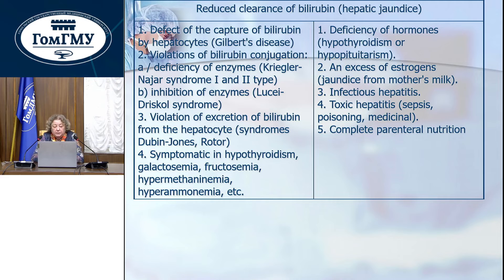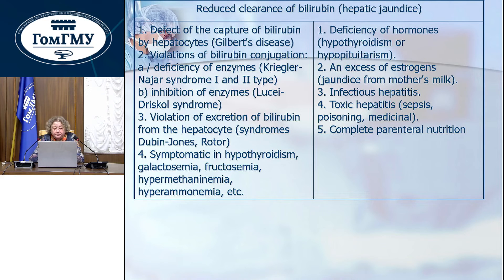Parenchymatous or hepatic neonatal jaundice, which includes erythropoietic porphyria or hepatic jaundice: defect of capture of bilirubin by hepatocytes such as Gilbert disease; violation of bilirubin conjugation — deficiency of enzyme in Crigler-Najjar syndrome type 1 and type 2; inhibition of enzyme; violation of excretion of bilirubin from hepatocyte; and symptomatic forms in hypothyroidism, galactosemia, and so on.